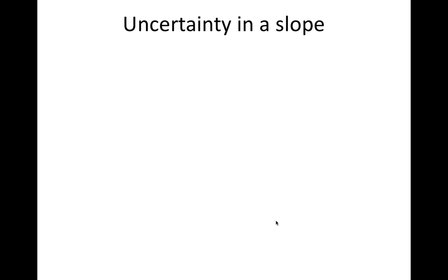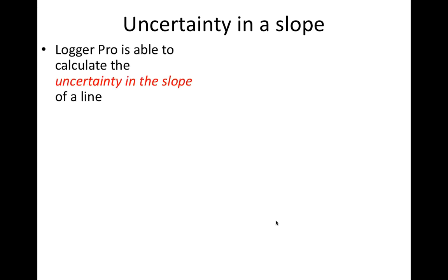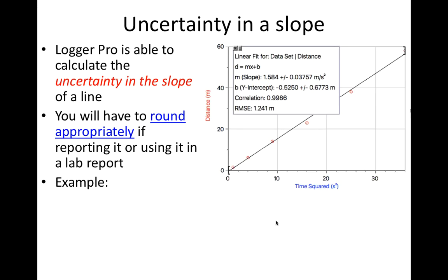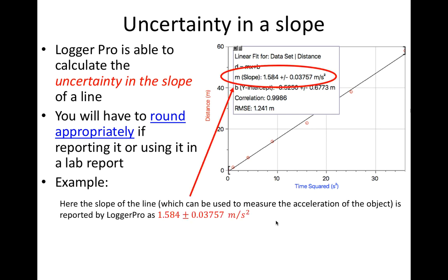In lab experiments, we will frequently use the slope of graphs to measure things, and the slope of a graph also has uncertainty. When reporting the slope of a graph in a lab report, it's likely that you will have to round the value that Logger Pro displays. Here is an example: I'm going to need to round the slope of this graph because the uncertainty is shown with four significant digits. I should round the best estimate to the same decimal place as the uncertainty.